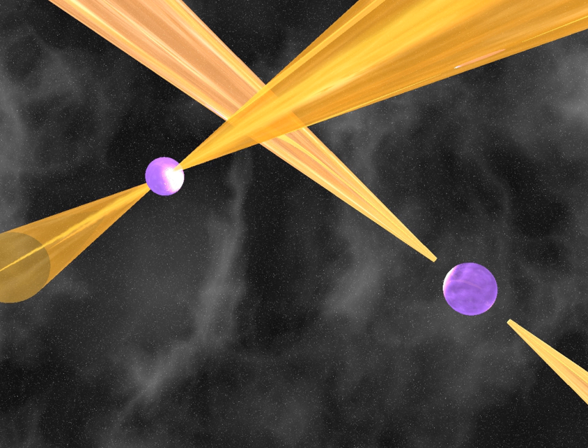Einstein's theory of general relativity predicts that two neutron stars would emit gravitational waves as they orbit a common center of mass, which would carry away orbital energy and cause the two stars to draw closer together and shorten their orbital period.